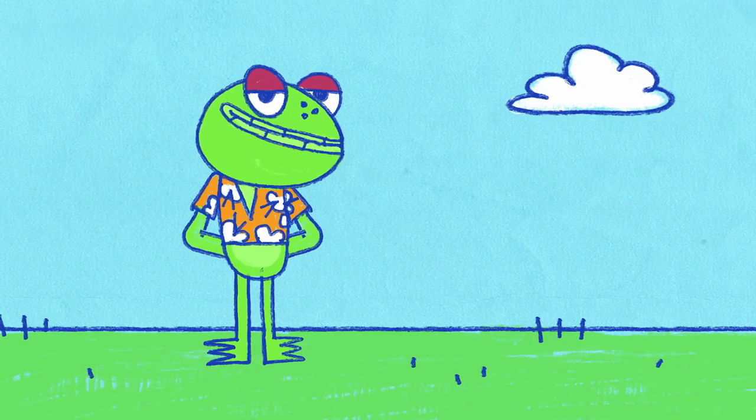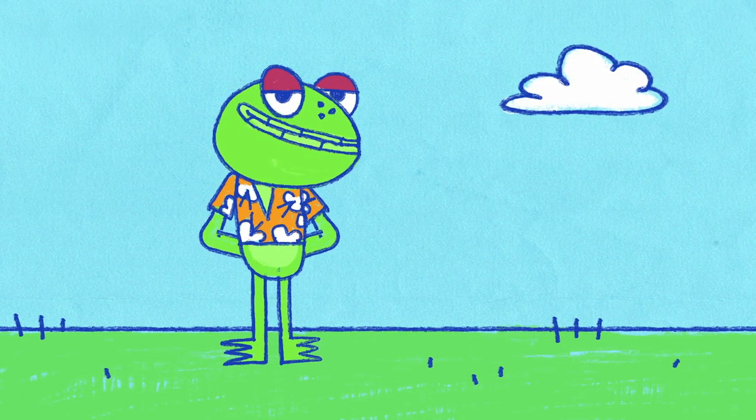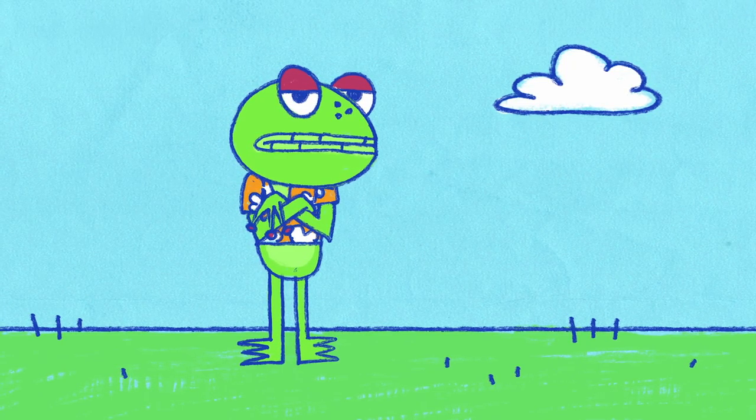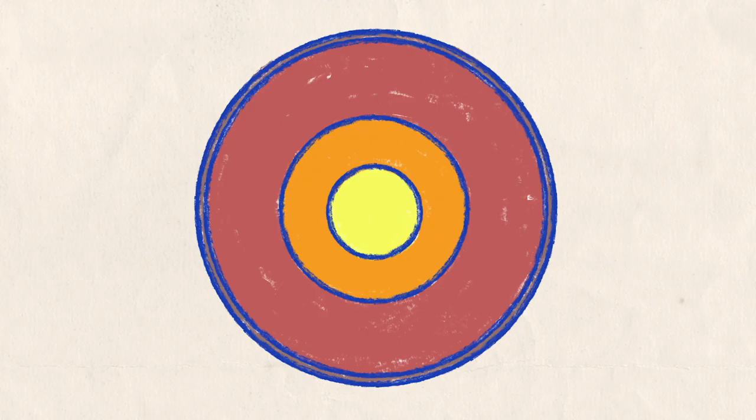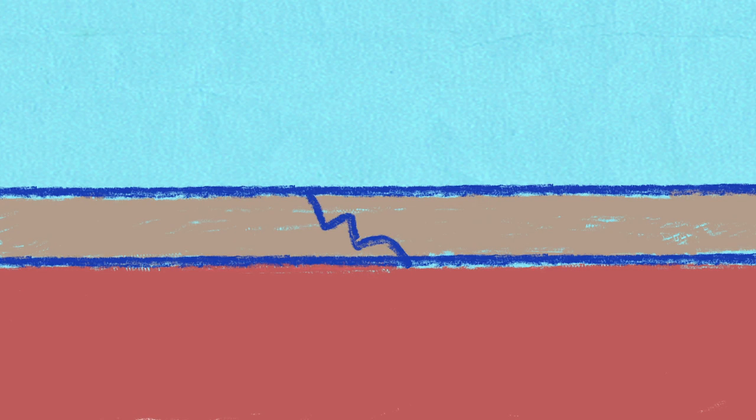Even though we don't usually feel it, the plates are always moving very, very slowly. Meanwhile, inside the earth is red hot, gooey rock called magma. And if there are any cracks or weaknesses in the earth's crust, the magma comes bursting through.